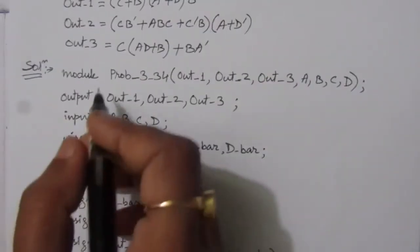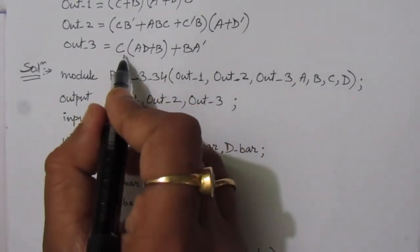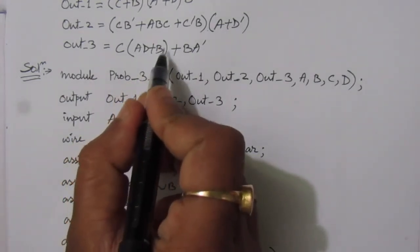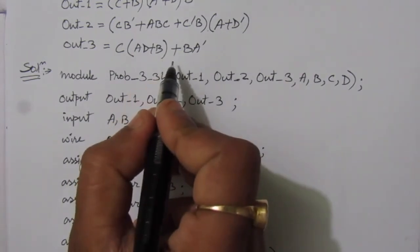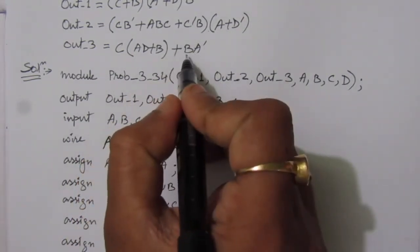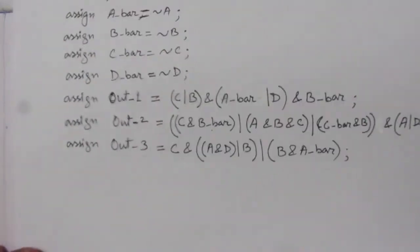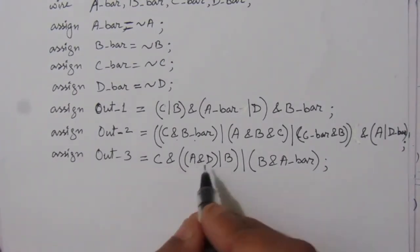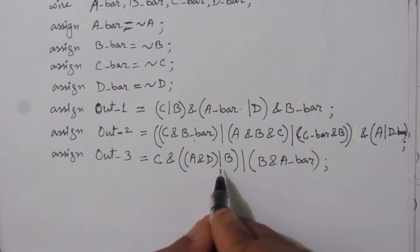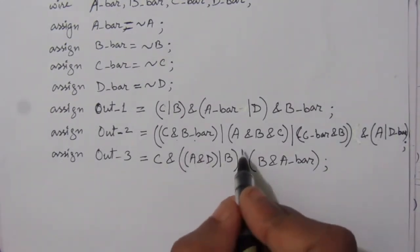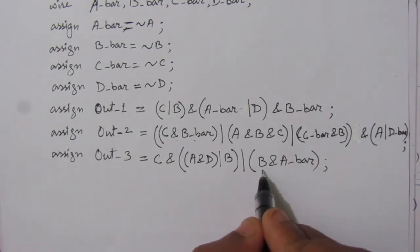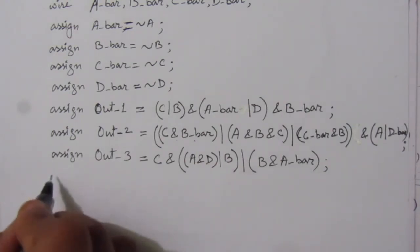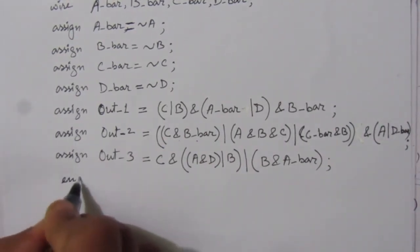For the third output, we write: assign out_3 = C & ((A & D) | B) | (B & A_bar). Within the bracket we write A AND D, then whole OR B, bracket close. Then we write OR, and within bracket B AND A_bar. Each line must be terminated with a semicolon. In the final line we write 'endmodule'. This is the Verilog gate-level description of these boolean functions.